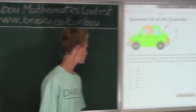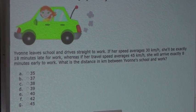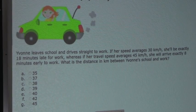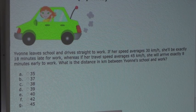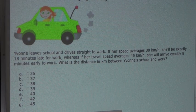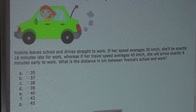So the question is, Yvonne leaves school and drives straight to work. If her speed averages 30 km per hour, she'll be exactly 18 minutes late for work, whereas if her travel speed averages 45 km per hour, she will arrive exactly 8 minutes early to work. What is the distance in kilometers between Yvonne's school and work?